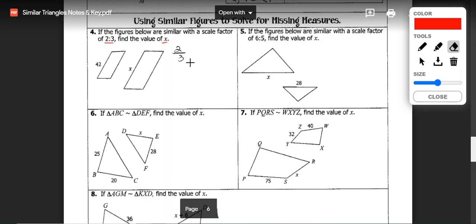Since we know that two-thirds is the scale factor, we know that that has to be equal to the proportion of the corresponding sides. Since side 42 corresponds with X, we just need to set up this ratio to be equal to two-thirds.